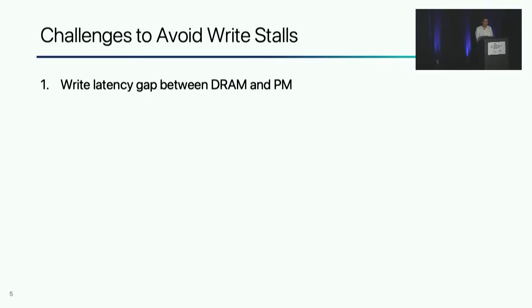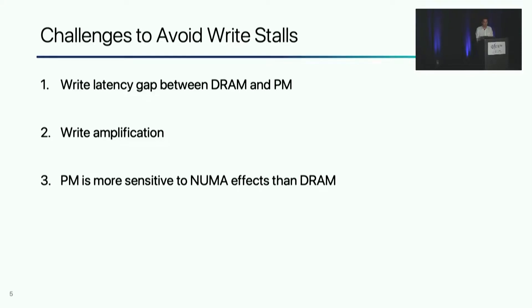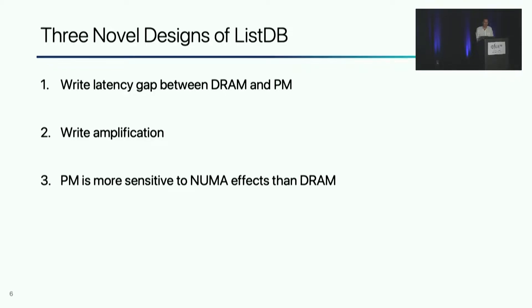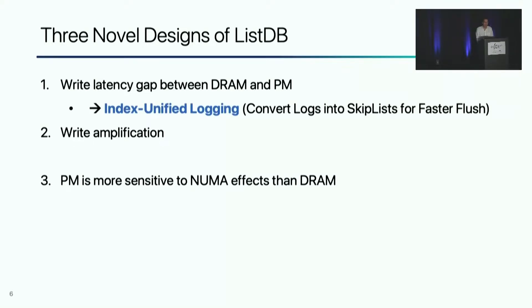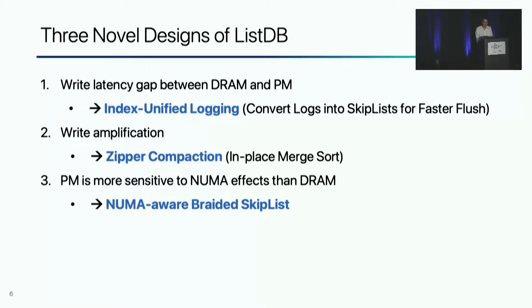There are three challenges to avoid write-stall in LSM trees. First, the write latency gap between DRAM and persistent memory. Second, LSM trees have a write amplification problem — the same key values are repeatedly written through flush and compaction. Third, persistent memory is more sensitive to NUMA effects than DRAM. To address these challenges and solve the write-stall problem, we designed ListDB with three novel designs: index unified logging, which converts log entries to skiplist elements for faster flush; zipper compaction, which performs in-place merge sort to reduce write amplification; and NUMA-aware braided skiplist, which reduces remote NUMA accesses for skiplist traversal.